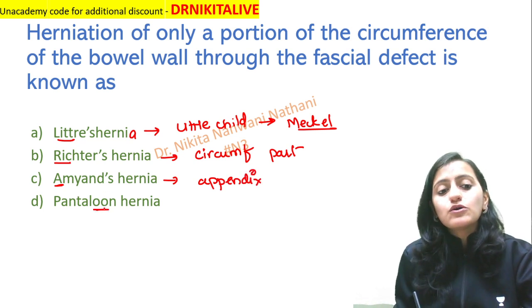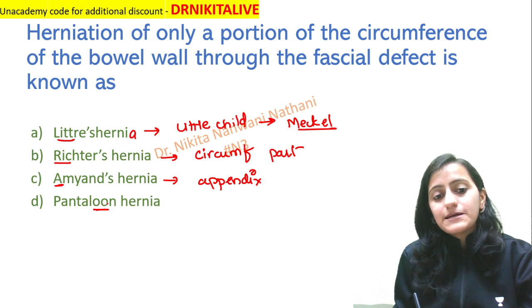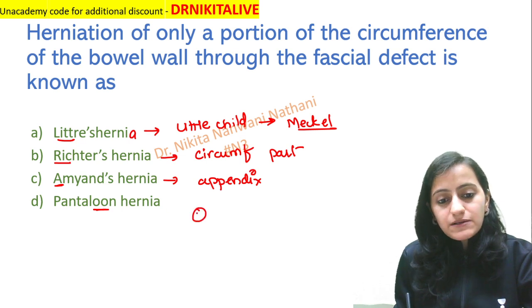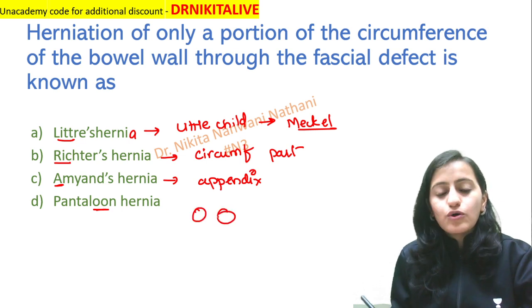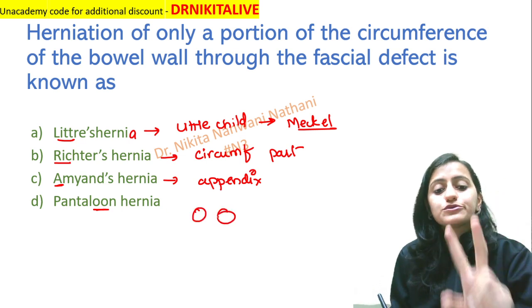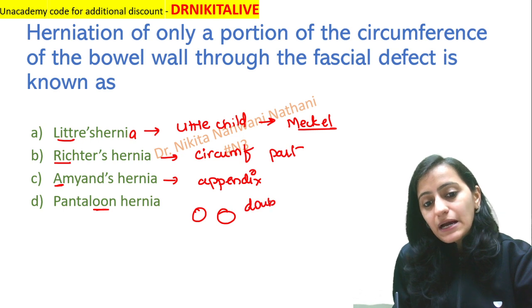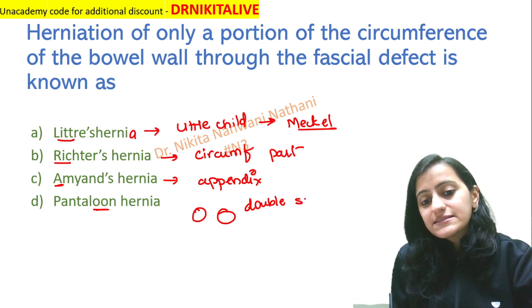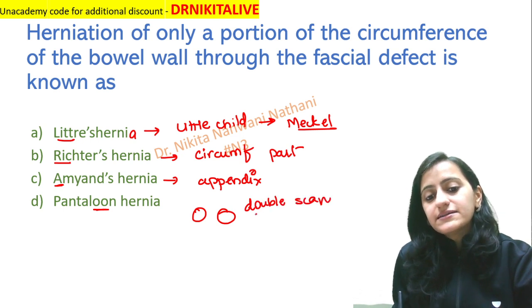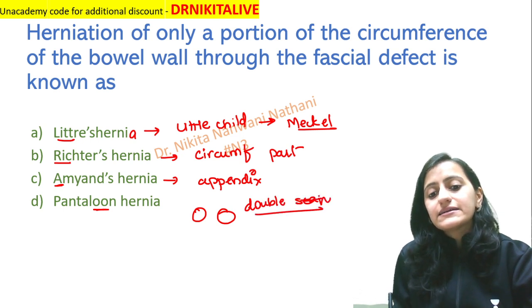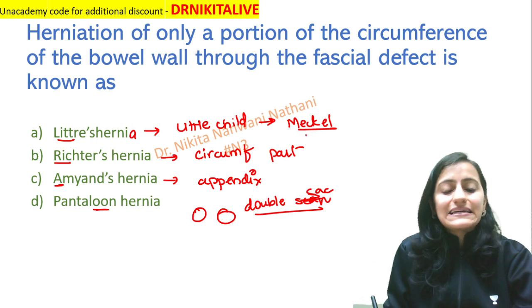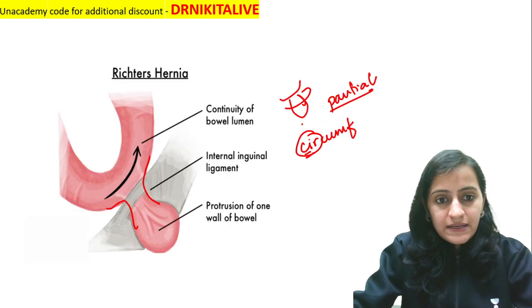For Pantaloon hernia, it has double O in its spelling. The two O's are like two sacs — so remember there are double sacs, meaning both direct and indirect hernia are present together.